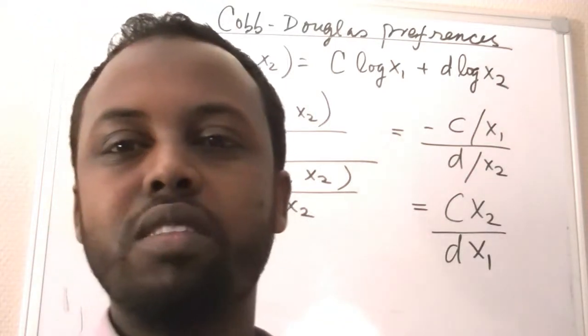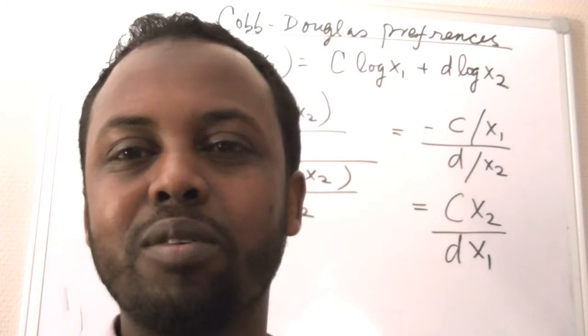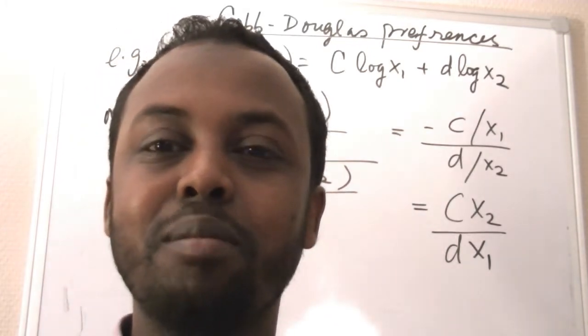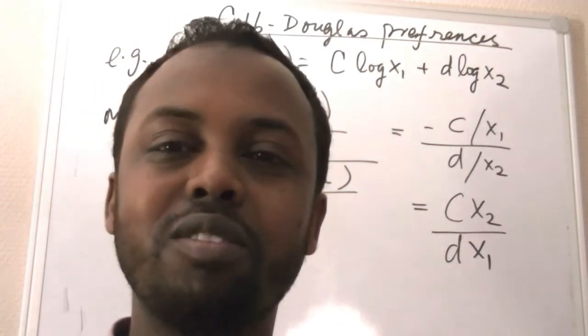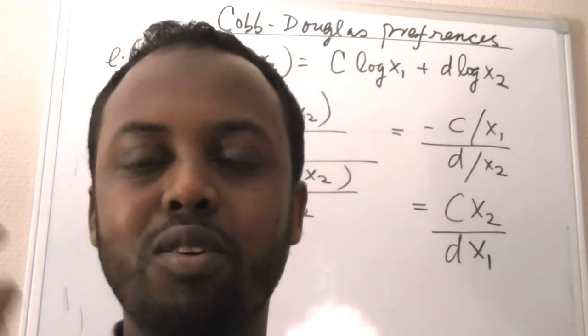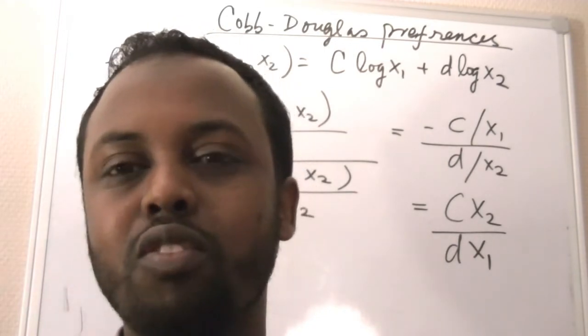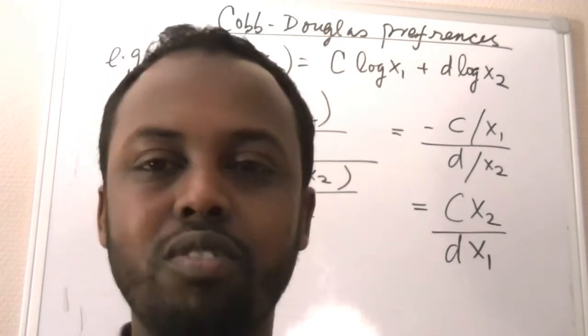Hi, in this video we are going to show that in Cobb-Douglas preferences, the marginal rate of substitution is independent of the way we present the utility, but only depends on the ratio of the parameters and the quantity of the goods in consideration.